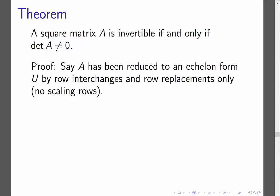So in my proof, what I'm going to do is say that A can be reduced to an echelon form by row interchanges and replacements only. So you're allowed to swap rows, you're allowed to replace rows, so multiply a row by a non-zero constant and add it to another row. And I'm not allowing you to scale the rows. I'm not allowing you to multiply a row by a constant.